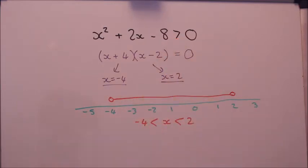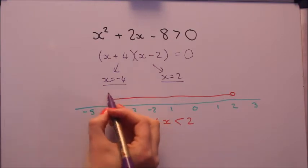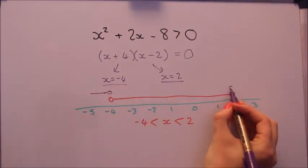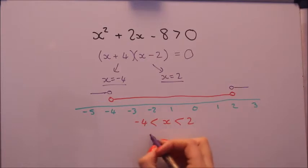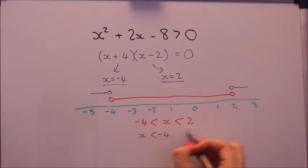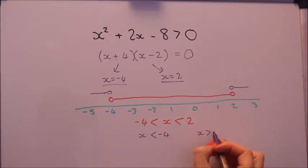The other option of course is that it's less than minus 4 and greater than 2, so either side. So that would be two separate inequalities written separately. x is less than minus 4 and x is greater than 2. So they're the two options and we don't know just by looking at it which option is correct. So the best way of finding out is to do a very quick sketch.